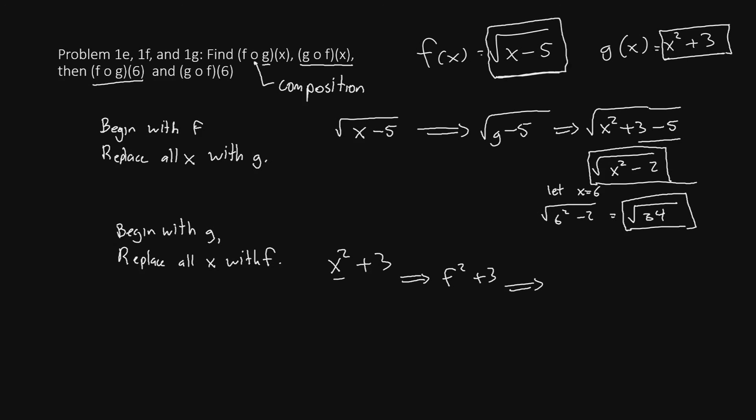Now we can replace the f with this function here, square root of x minus 5. So we'll have square root of x minus 5 squared plus 3. Now when you have a square over a square root, the two functions cancel. So we'll have x minus 5 without the square or the square root plus 3. If we simplify, we get x minus 2.